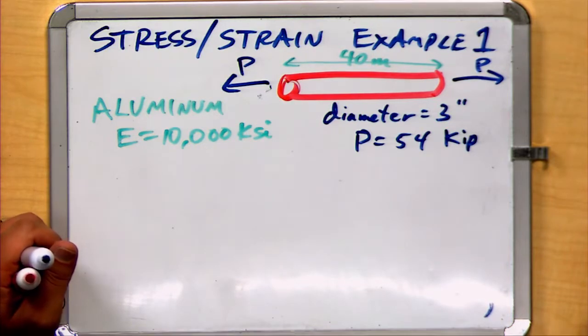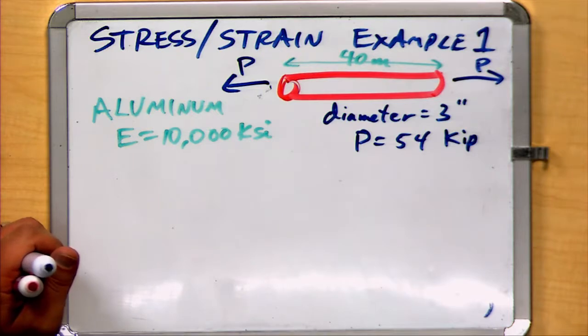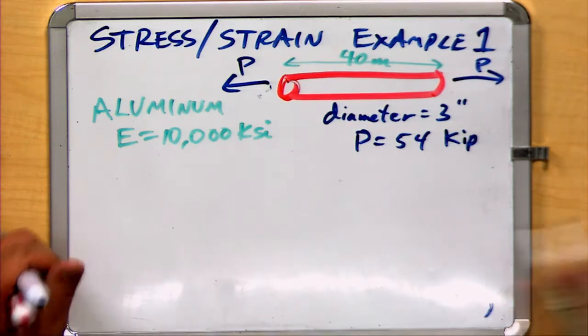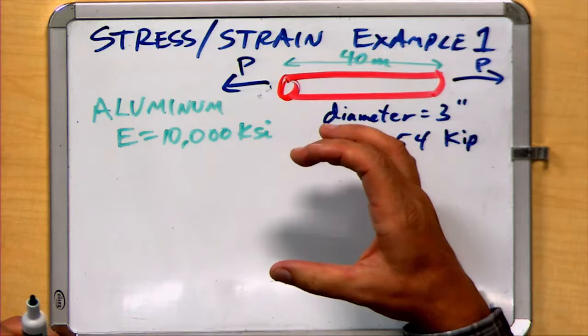So if I look at the aluminum, there's a certain loading on the aluminum here. In this case, 54 kilopounds, or 54,000 pounds, is being applied to a rod that is three inches in diameter.